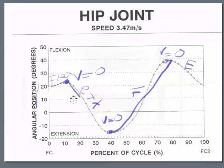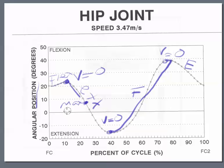Then we can ask where velocity would be at a maximum. Typically, velocity is a maximum at mid-range. So mid-range of this extension phase will have maximum velocity, and mid-range of this flexion phase will also have maximum velocity.